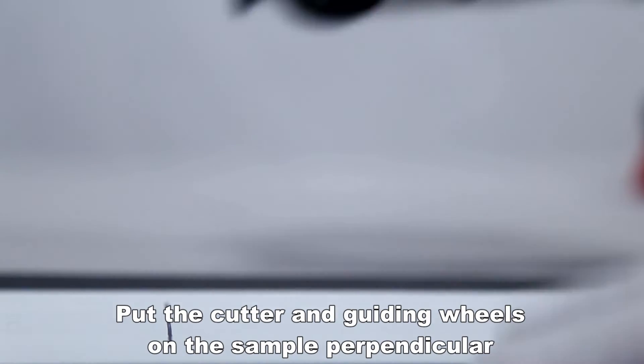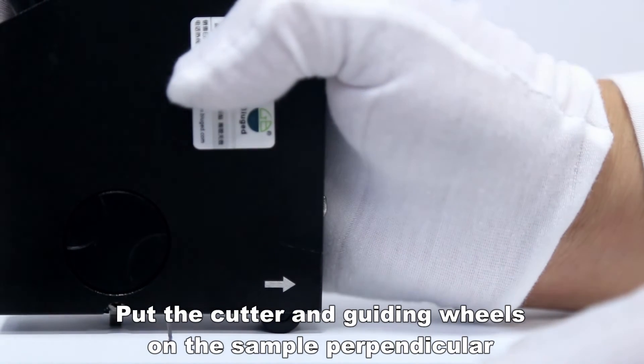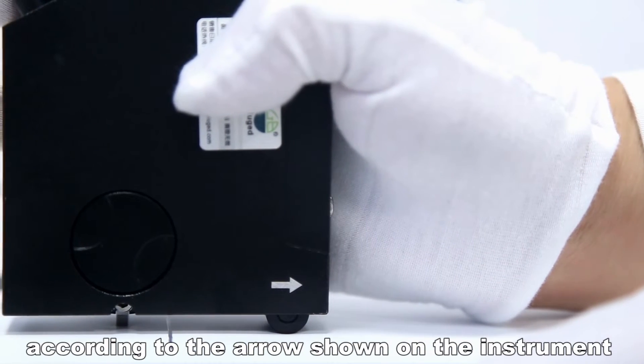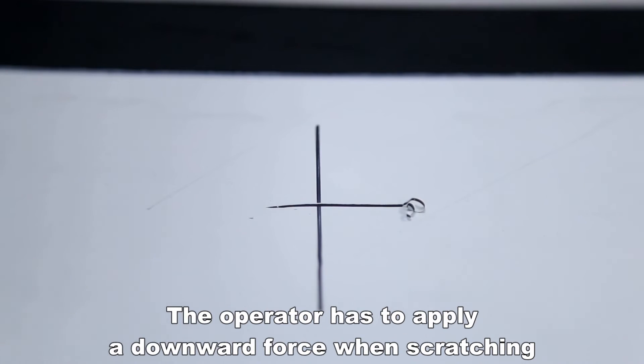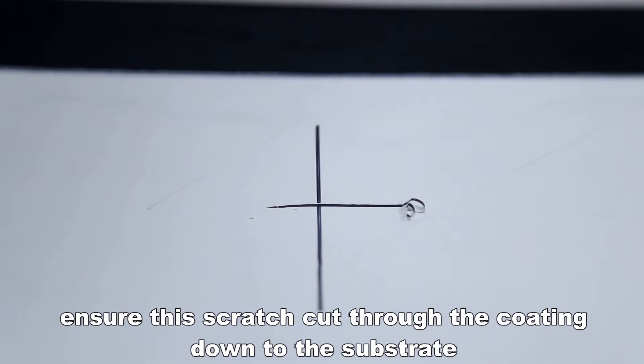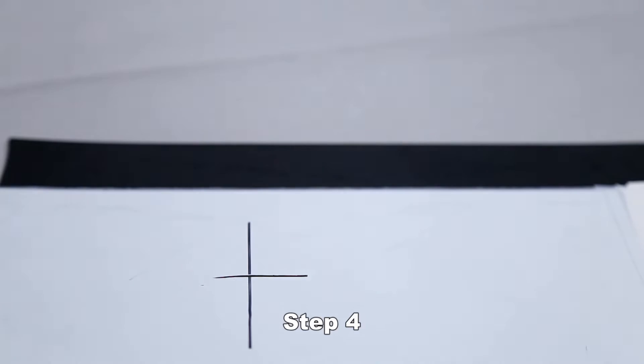Put the cutter and guiding wheels on the sample perpendicular to the arrow shown on the instrument. Make a horizontal scratch perpendicular to the black mark line. The operator must apply downward force when scratching to ensure the scratch cuts through the coating down to the substrate.